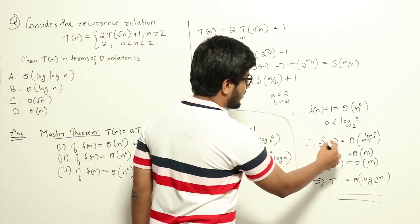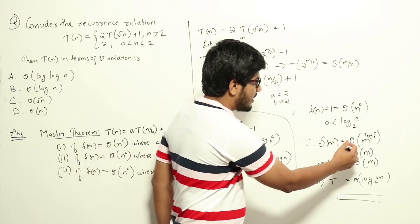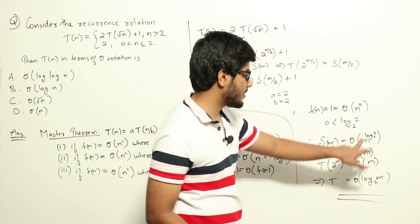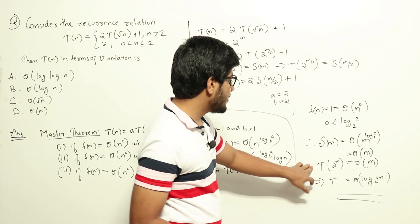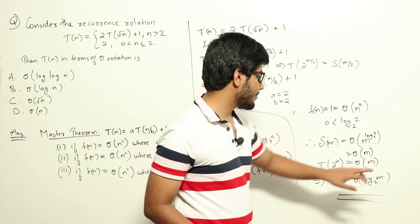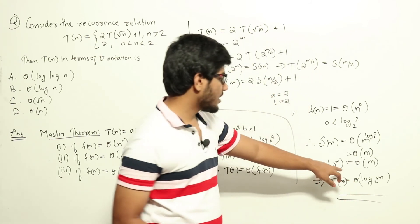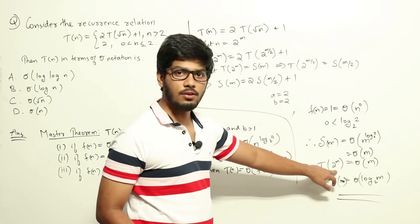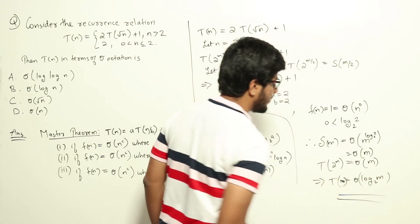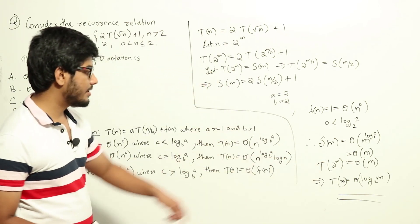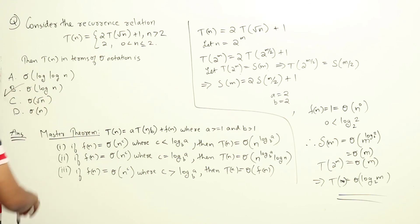Applying Case 1, S(m) = Θ(m^(log_2(2))) = Θ(m^1) = Θ(m). Since S(m) = T(2^m) and m = log_2(n), we get T(n) = Θ(log_2(n)). So the answer from the given options is option B: Θ(log n).